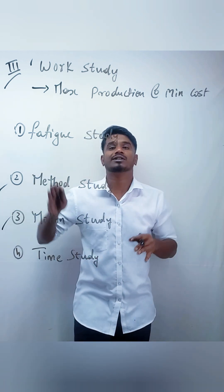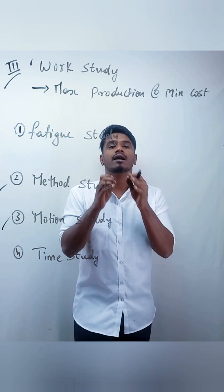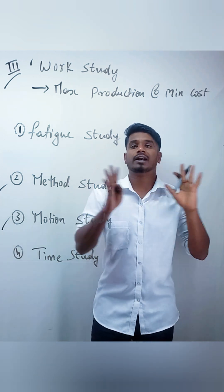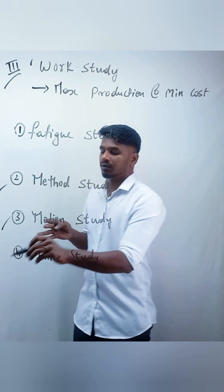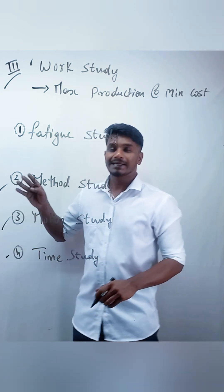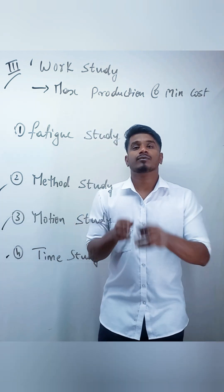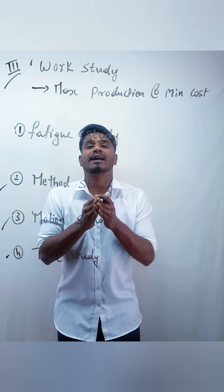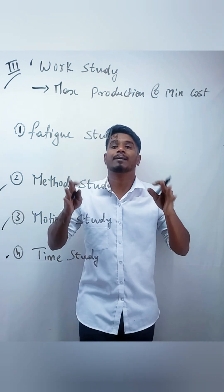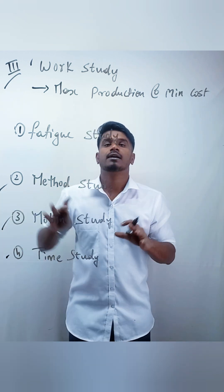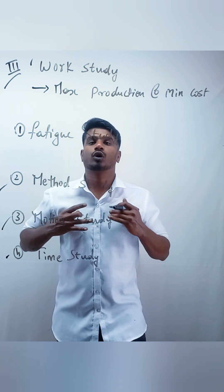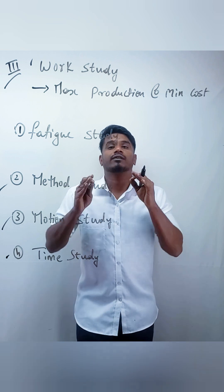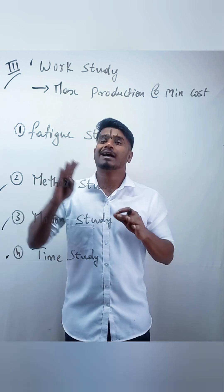The third one is motion study, which is about observing the movements of employees to eliminate unproductive or unwanted movements. The fourth one is time study, which determines how much time is required to complete a task, how many employees we need, and helps us fix a target for the employees.